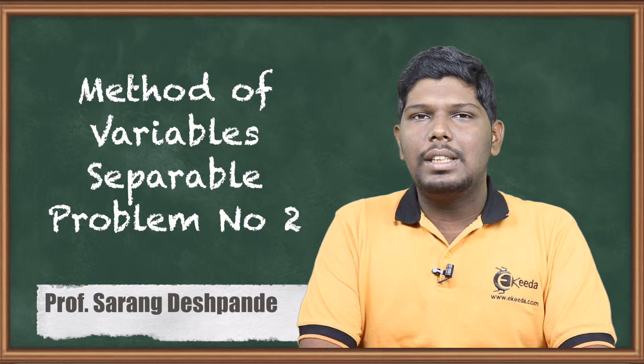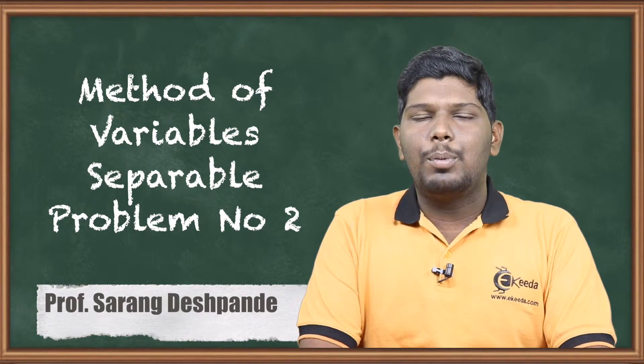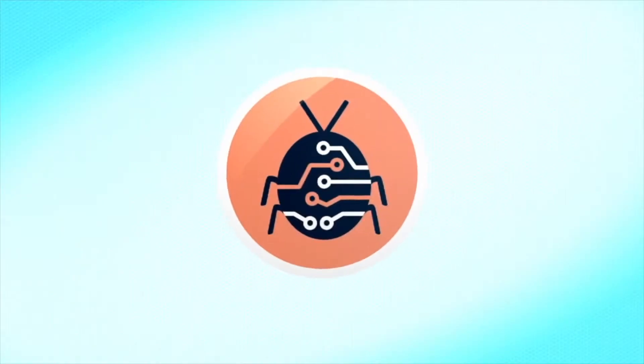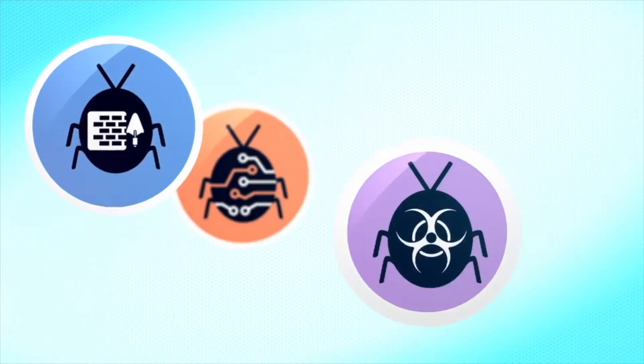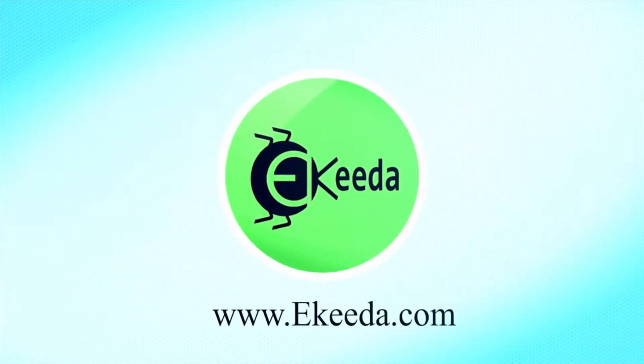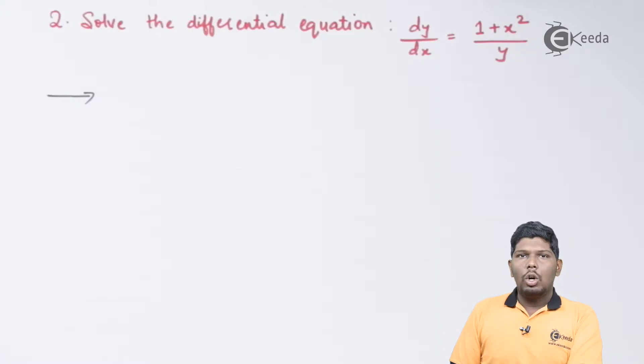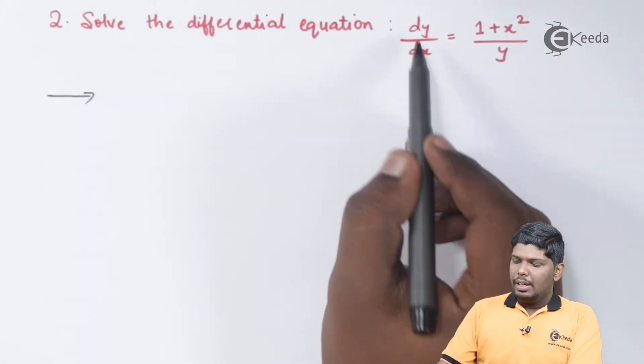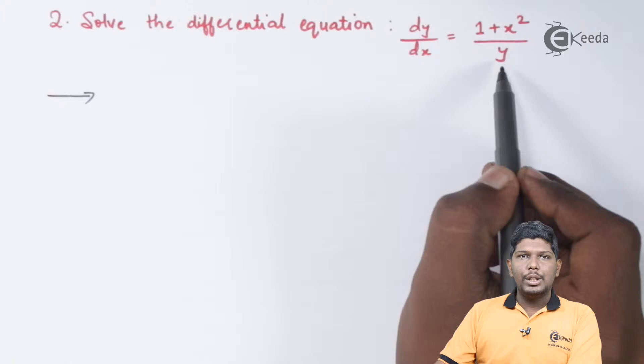Using variable separable method, so let us start with problem number two. Solve the differential equation dy by dx is equal to 1 plus x square upon y.